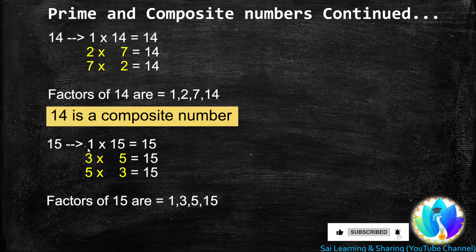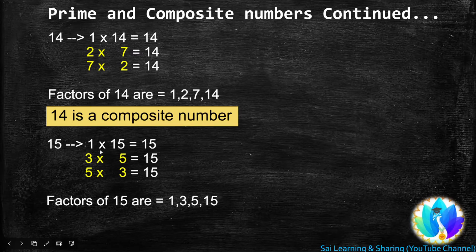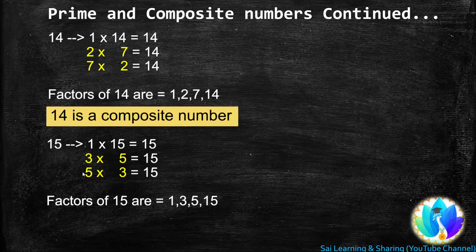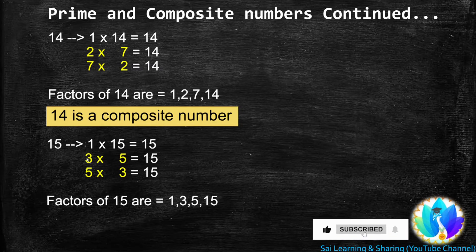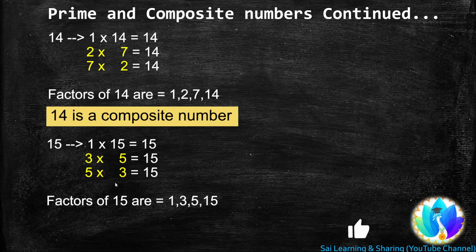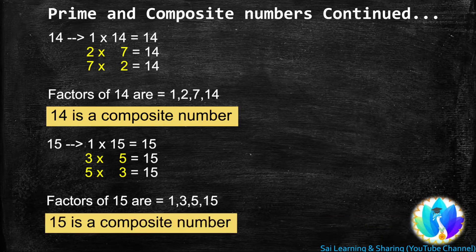Next, 15. 15 is not a multiple of 2. 15 is a multiple of 3: 3 × 5 = 15. 15 is not a multiple of 4, but 15 is a multiple of 5: 5 × 3 = 15. We stop here because both 3 and 5 have occurred earlier. So the factors of 15 are 1, 3, 5, and 15. Since 15 has more than two factors, 15 is a composite number.